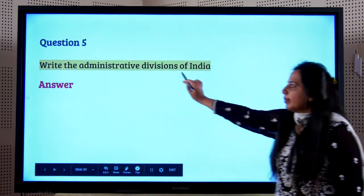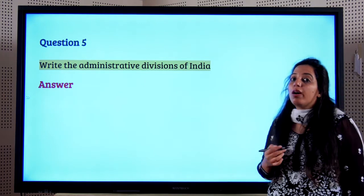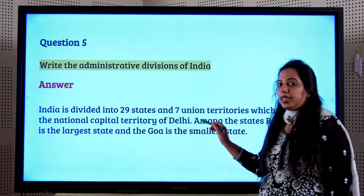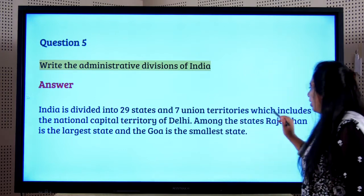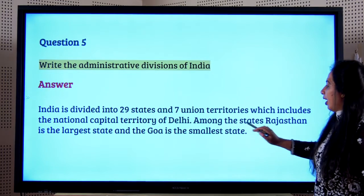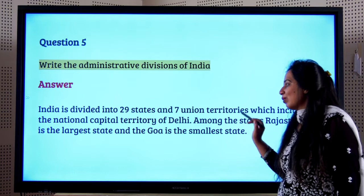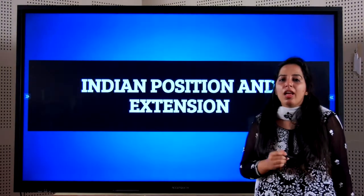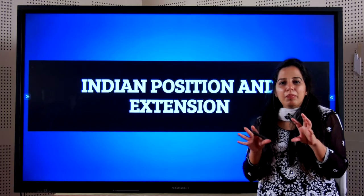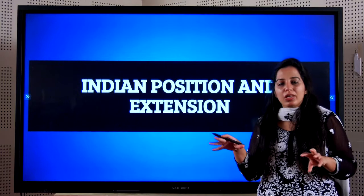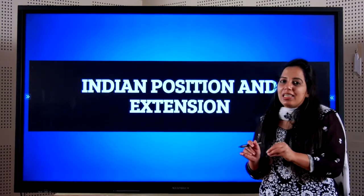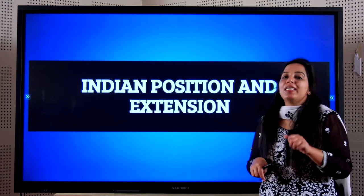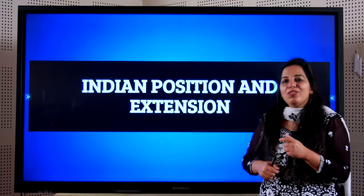For administrative divisions, India is divided into 29 states and 7 union territories, which includes the national capital territory of Delhi. The largest state is Rajasthan and the smallest is Goa. This brings us to the end of the chapter on India's position and extension. There are many important statistics regarding latitude and longitude that require practice and writing. Practice the quiz on the app and you will be perfect by exam time. All the best, students!